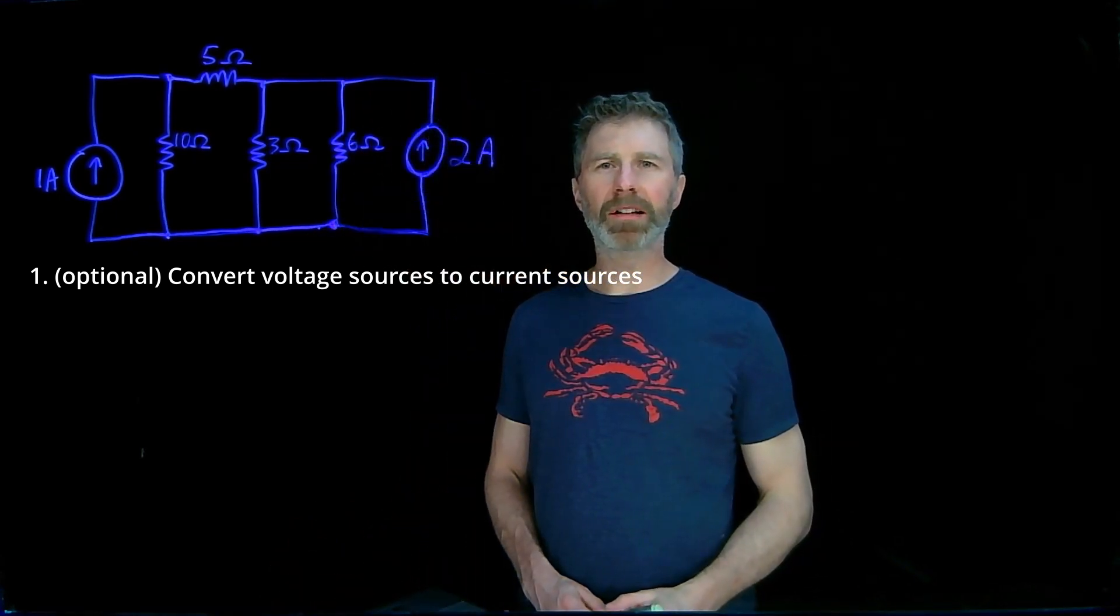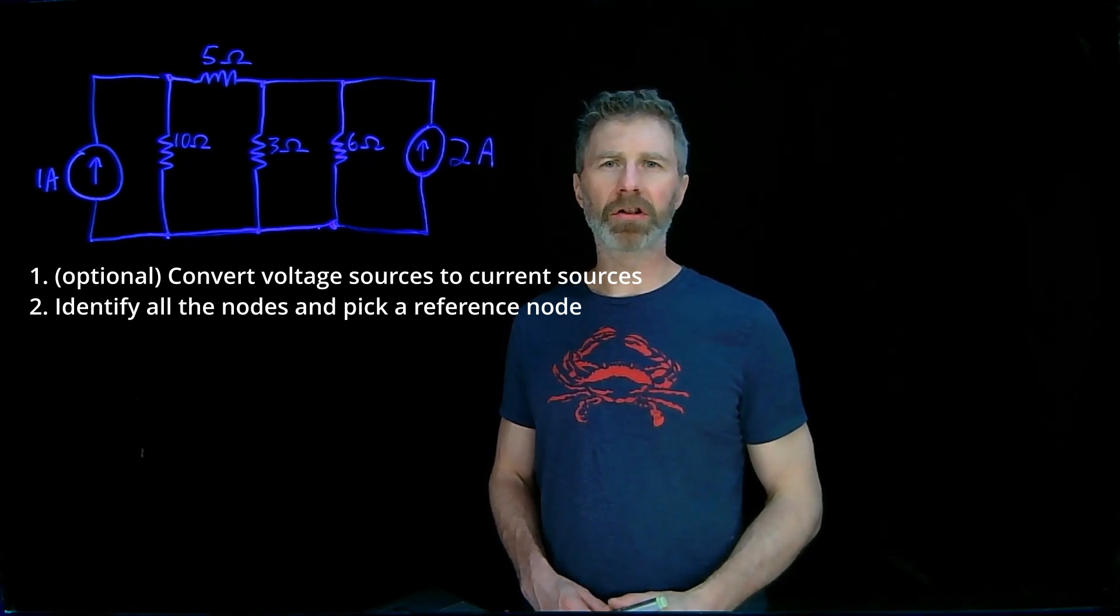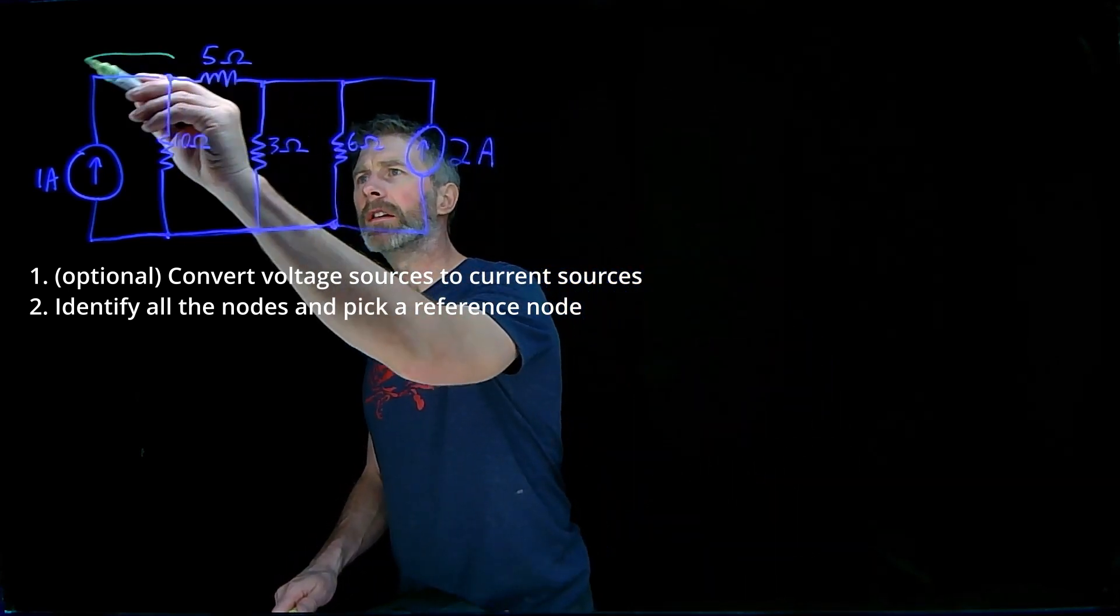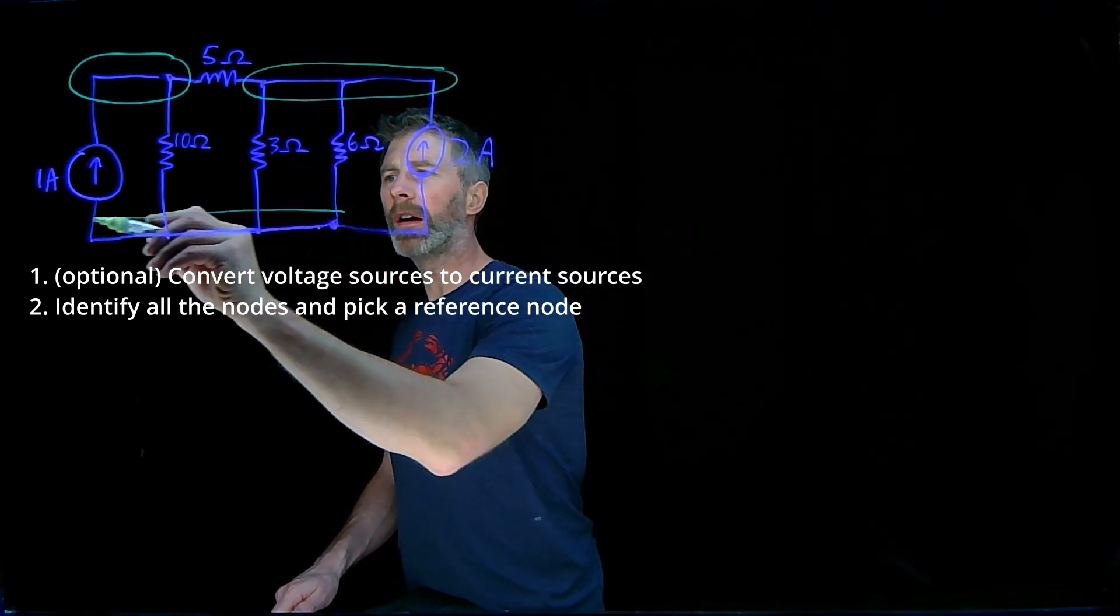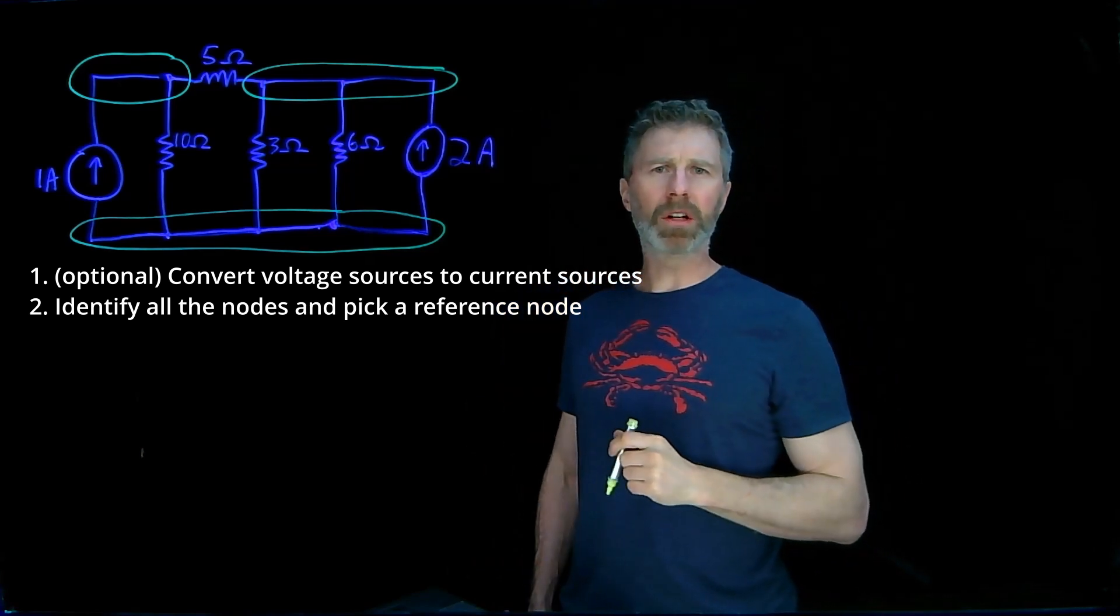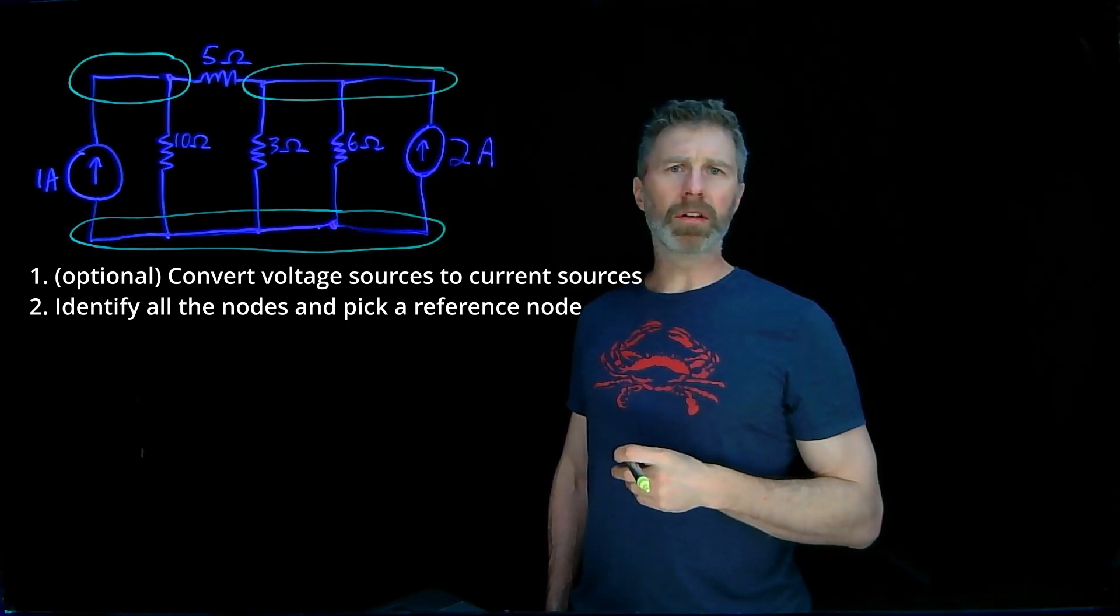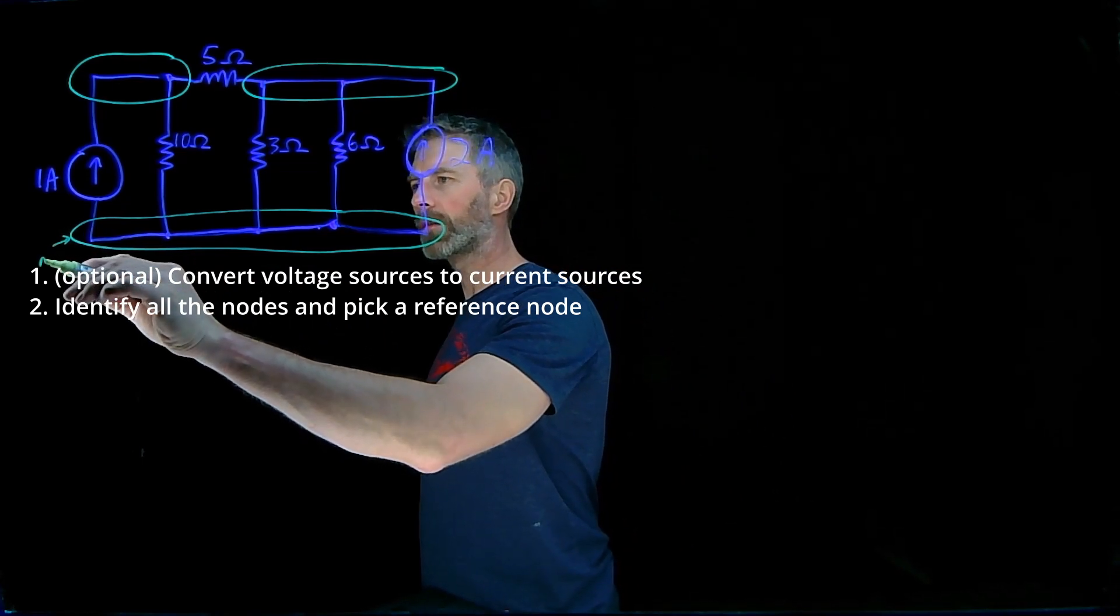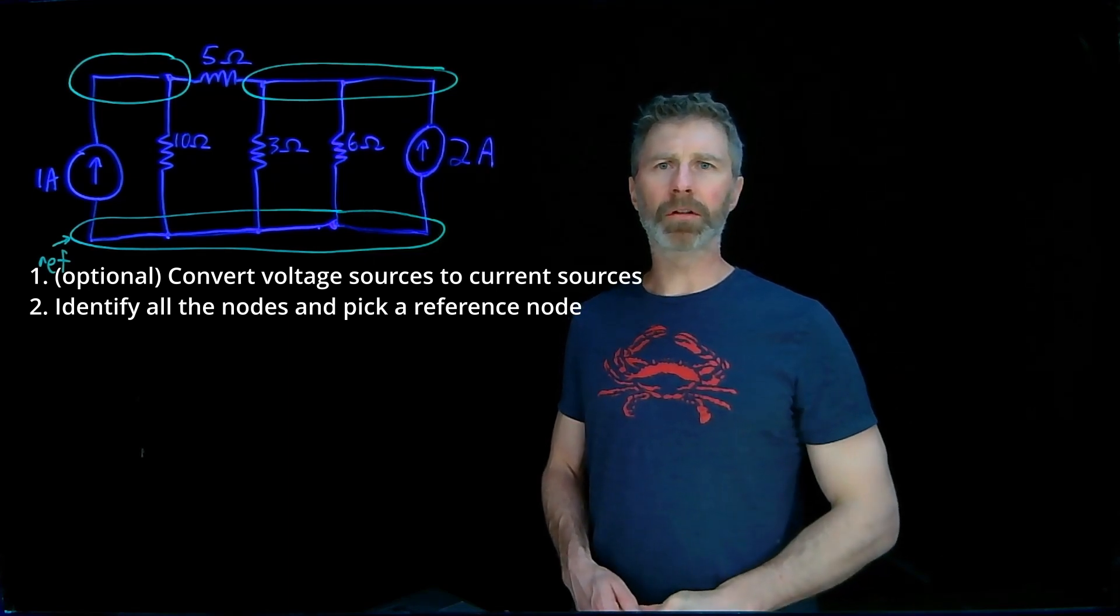The second step is to identify all the nodes, all the junctions where there's three or more circuit branches going into that junction. We have a node right here, and here, and one there. With all the nodes you identify, you need to pick one that's going to be your reference node. The easiest one to pick is usually the ground node or the bottom node. This one is going to be our reference.